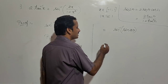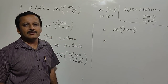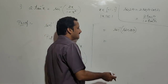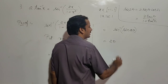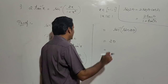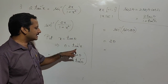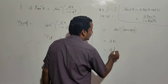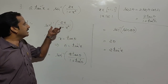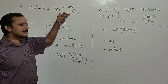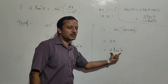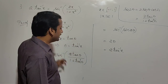Since sin⁻¹(sin y) = y, we can write sin⁻¹(sin 2θ) = 2θ. Now, θ = tan⁻¹(x), so this becomes 2 tan⁻¹(x), which is our LHS. We started by considering the RHS, sin⁻¹(2x/(1+x²)), and proved it equals 2 tan⁻¹(x). Therefore, 2 tan⁻¹(x) = sin⁻¹(2x/(1+x²)).